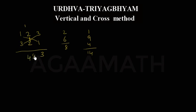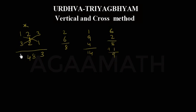Next step for 123 into 321: cross gives 2 into 3 is 6 and 1 into 2 is 2, total 8, plus the carried 1 is 9. Then 1 into 3 is 3. So the result is 39483.